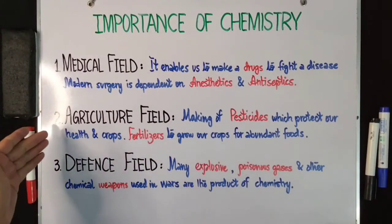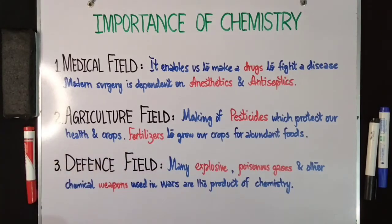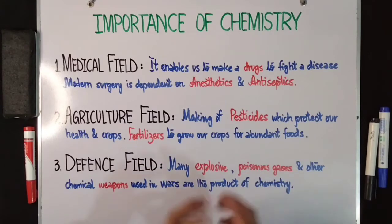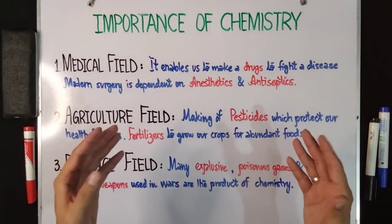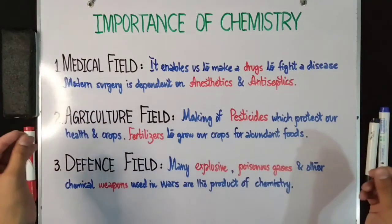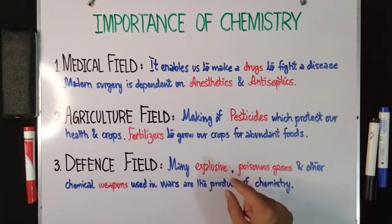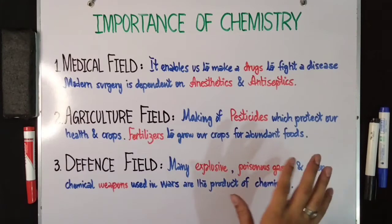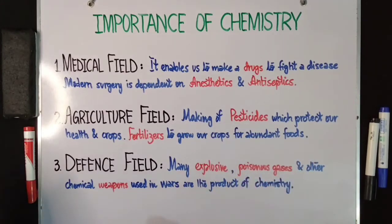Moving on to number two: the agriculture field. Chemistry also plays a very important role in agriculture. We make pesticides to protect our crops and maintain health. We make fertilizers to grow and enhance our crops. All of these are products made from chemicals.